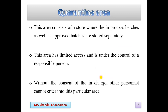The next is the quarantine area. This area consists of a store where in-process batches as well as approved batches are stored separately. We have to store our in-process batches and approved batches in this quarantine area. This is known as the quarantine area, and it has limited access and is under the control of a responsible person.